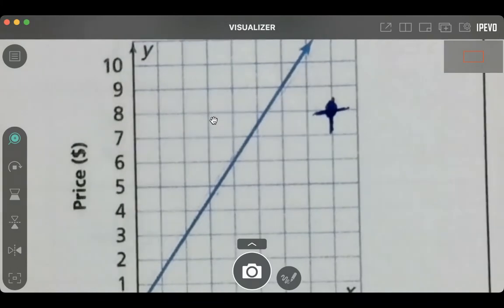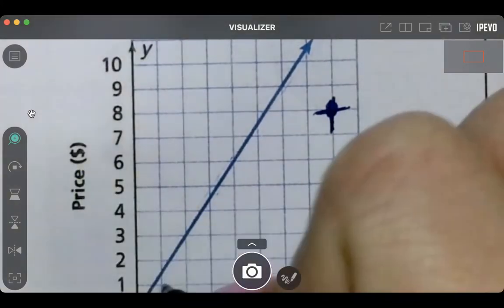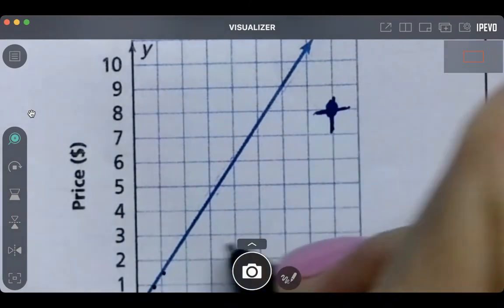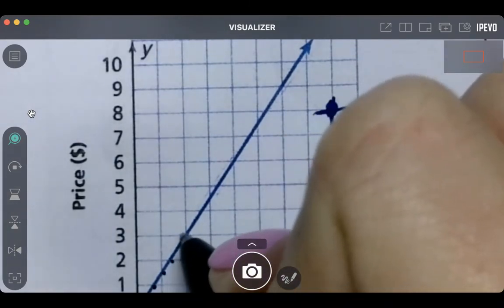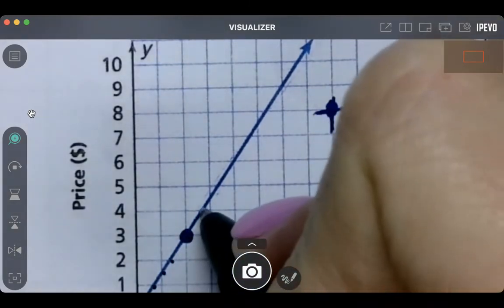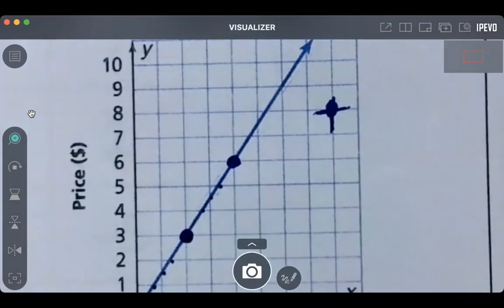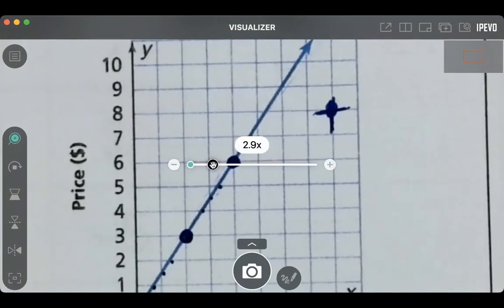So do you see how right here that doesn't touch corners, that doesn't touch corners, that doesn't touch corners, that touches corners? Nope, nope, nope. Yes. So that's what I mean by touching corners. Okay. So now I'm going to zoom that back out.